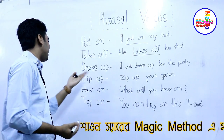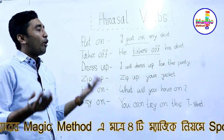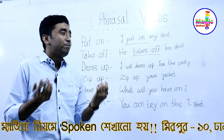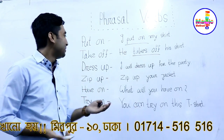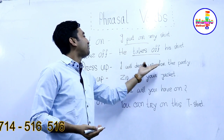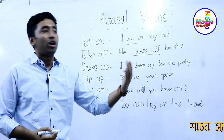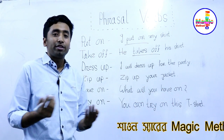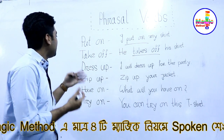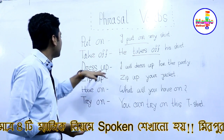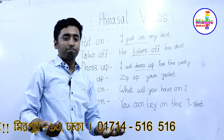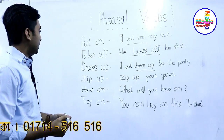The third phrasal verb is very interesting: 'dress up.' You know that at an occasion or a party we dress up because we have to wear something nice. Here is an example: I will dress up for the party. You have a party tonight, so you have to dress up and wear something nice — a new dress.